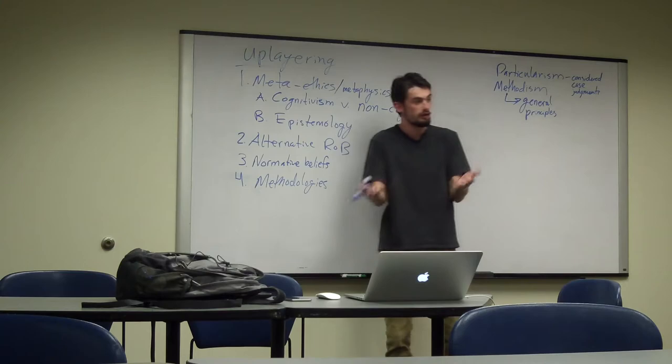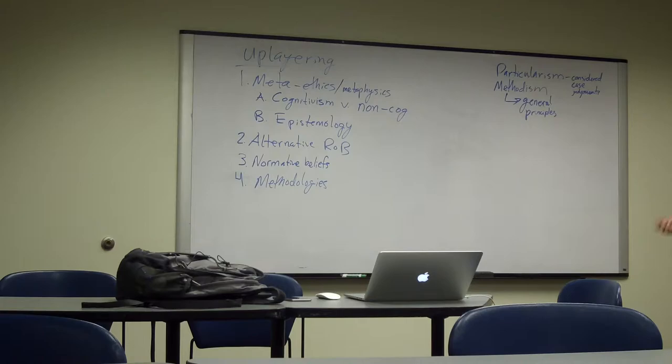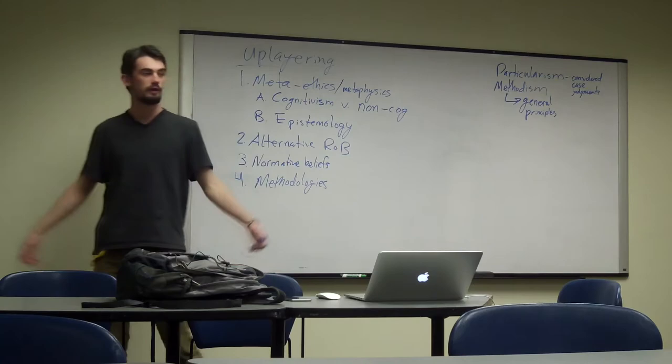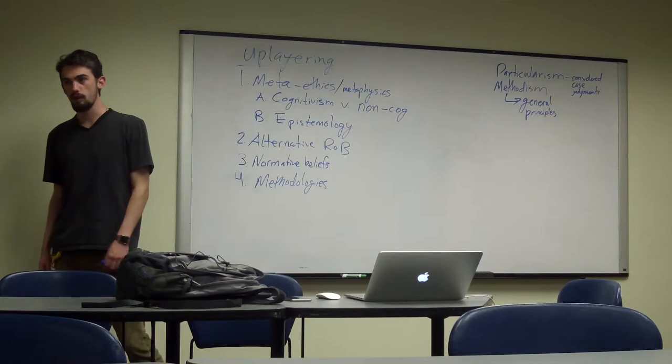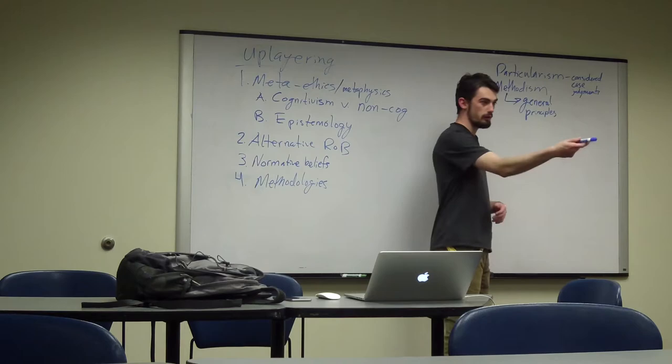It says that there are general principles we can construct about things. We can construct general principles about mathematics that apply to any mathematical instance. We can construct general principles about ethics that apply to any ethical instance, right? What might some of these principles look like? Well, they could take a bunch of different forms. Can anyone think of one, for example? What might be a Methodist belief about some moral truth? Torture is bad. Yeah, torture is wrong, right? Any torture is wrong.